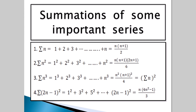n squared into n plus 1 all squared by 4 is also equal to sigma n, all squared. Next, last one: sigma 2n minus 1 all squared. 1 squared plus 3 squared plus 5 squared up to 2n minus 1 all squared equals n into 4n squared minus 1 by 3.